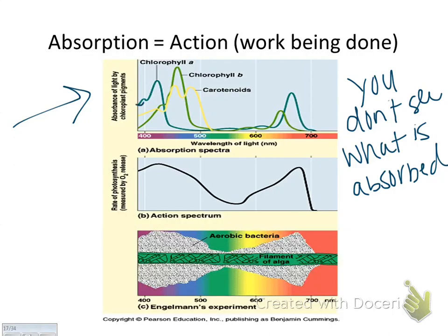Looking at the chlorophyll A line, the purple and violet colors are absorbed — that's why plants' leaves don't appear purple. They don't absorb blue, green, or yellow, but they do absorb orange and red, and they reflect the color you see. Plants actually use reds and blues but not green — they're reflecting green, pushing it back out.